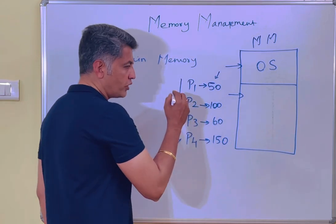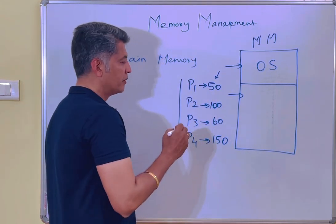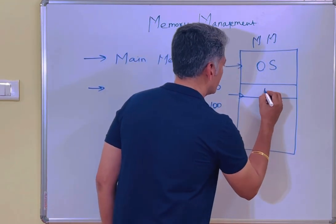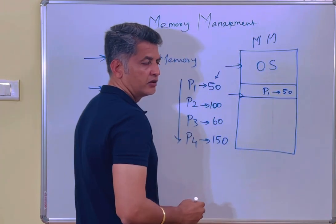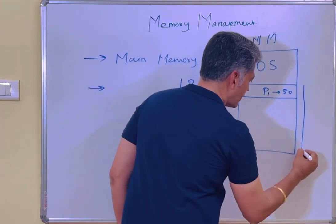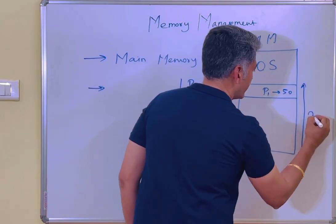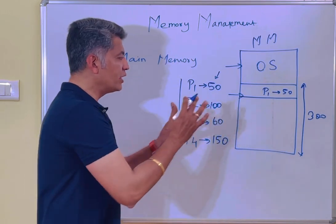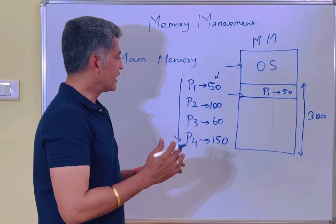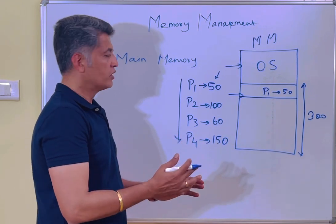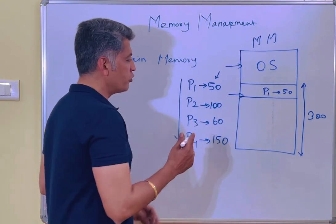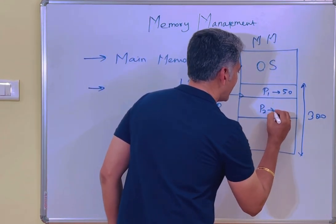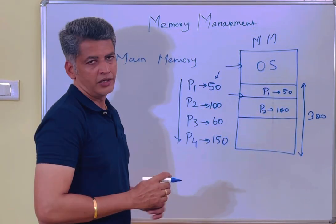If process 1 gets execution by the operating system, the OS will allocate one portion for process 1 — that is 50 locations. The total number of locations here is 300. So 50 locations are allocated for process 1. Then process 2 comes in, and the operating system allows it — process 2 also gets allocation of 100 locations.